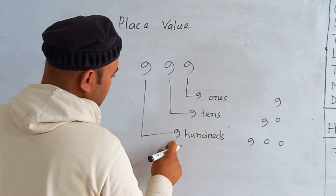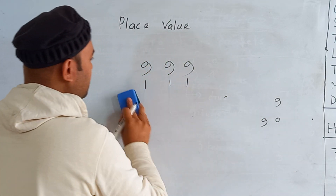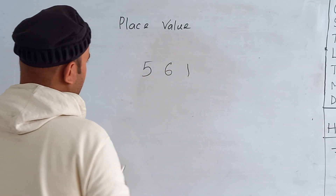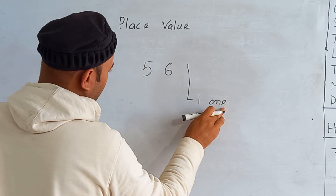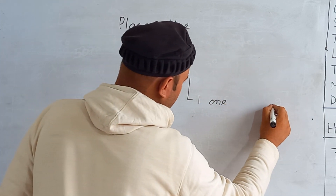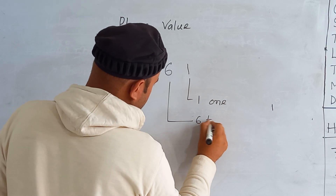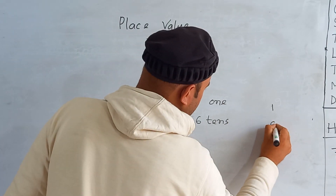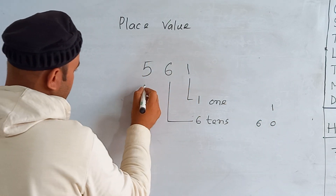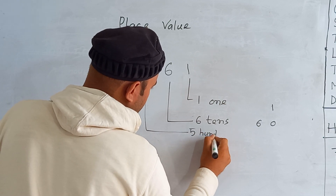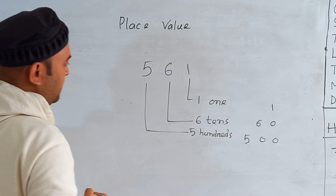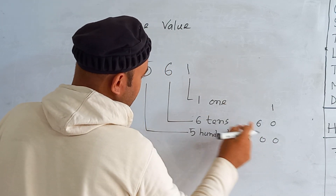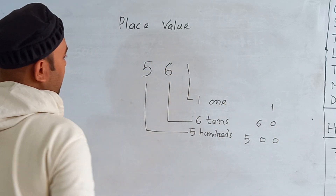So for 999: nine ones = 9, nine tens = 90, nine hundreds = 900. Now look at the last example: 561. One is in the ones place — one ones equals 1. Six is in the tens place — six tens equals 60, zero in ones place, six in tens place. Five is in the hundreds place — five hundreds equals 500, zero in ones, zero in tens, five in hundreds place. So: five hundreds = 500, six tens = 60, one one = 1.